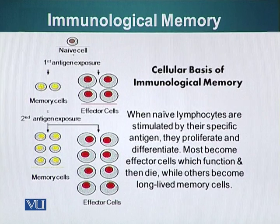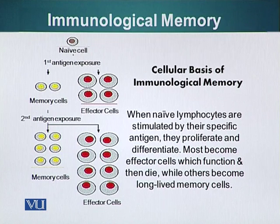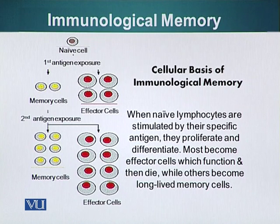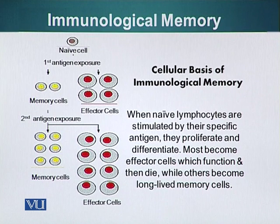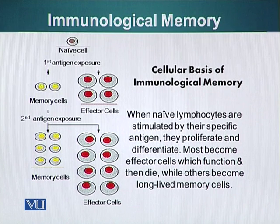What is the cellular basis of immunological memory? We start with a naive cell, which when it encounters an antigen for the very first time, it divides. If it is a B cell, it divides into two different types of cells: one is a memory cell, and the other is an effector cell. In the case of B cells, effector cells are the plasma cells which produce antibodies and release them into the system. Effector cells are short-lived — they produce a lot of antibodies and then gradually die off, at which point the primary immune response shuts down.